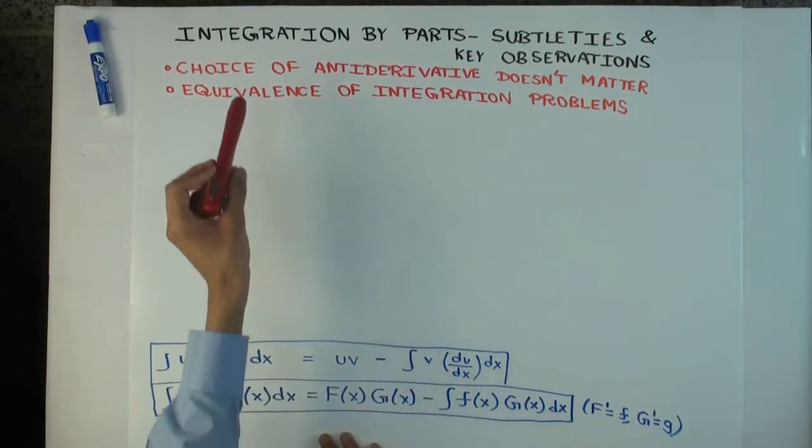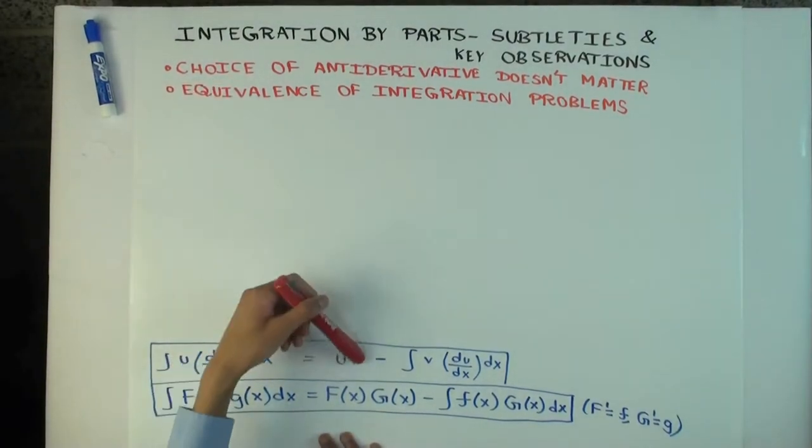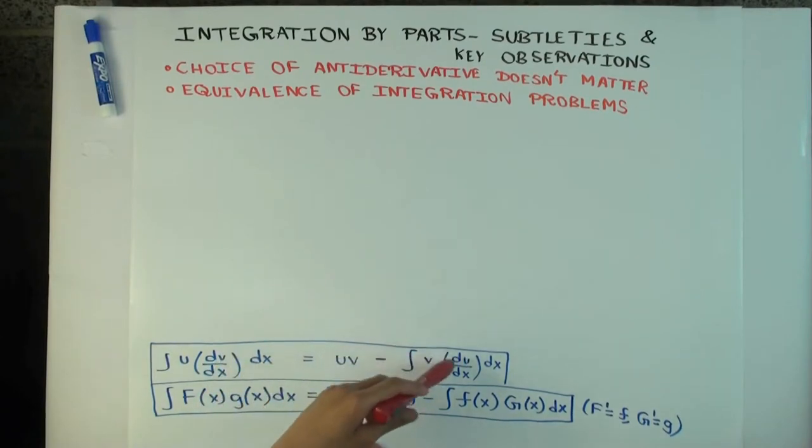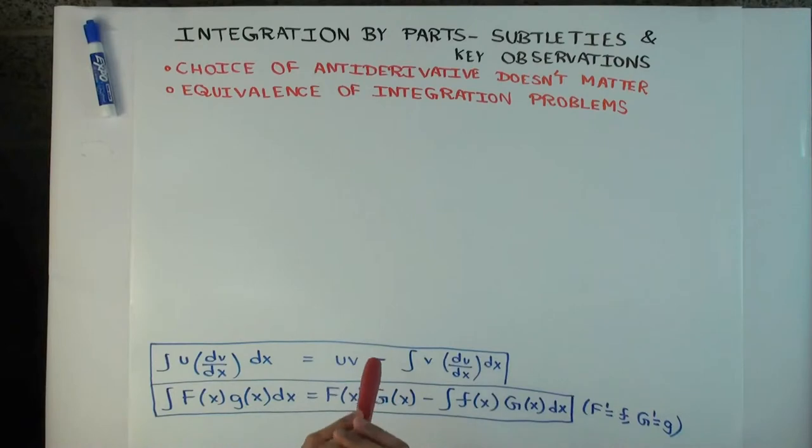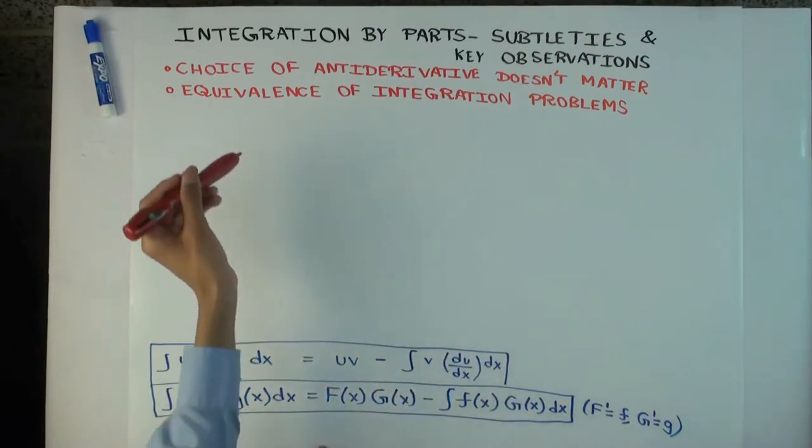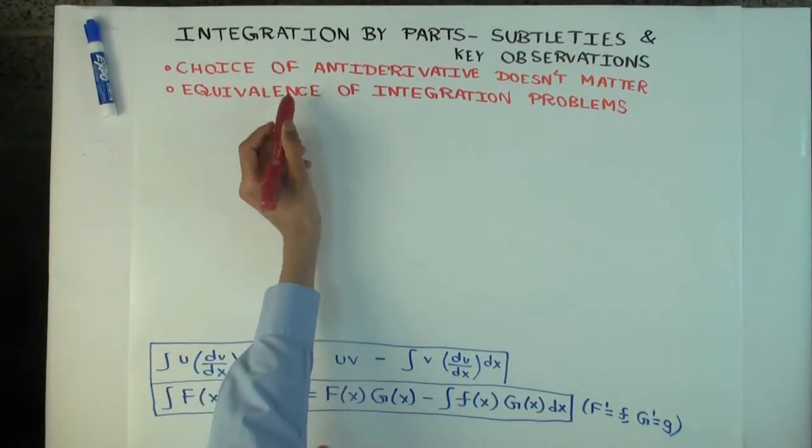And the answer is that it doesn't matter. So whichever antiderivative you pick, the final answer to the question will be the same. And moreover, the complexity of the problem will not be different. So the choice of antiderivative doesn't affect the complexity of the second integral, which you need to do here. So it's something you don't have to worry about. Maybe you weren't worrying about it as it is, but in case you were, it's not something to worry about.